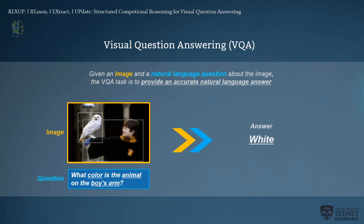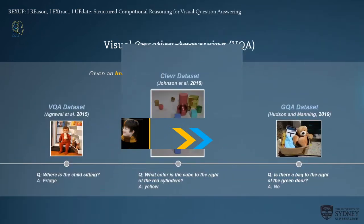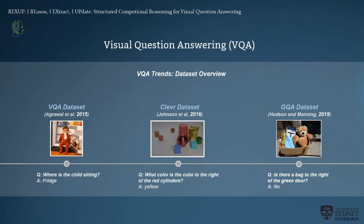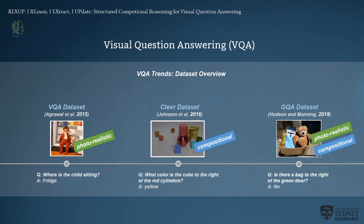The current VQA trends are not that basic at all. Let's see the VQA research trends with different dataset overviews. The first VQA was introduced in 2015 with photorealistic images and simple questions. Then the CLEVR dataset introduced more complicated computational QA patterns, which required strong logical reasoning, like asking 'what color is the cube to the right of the red cylinders?'